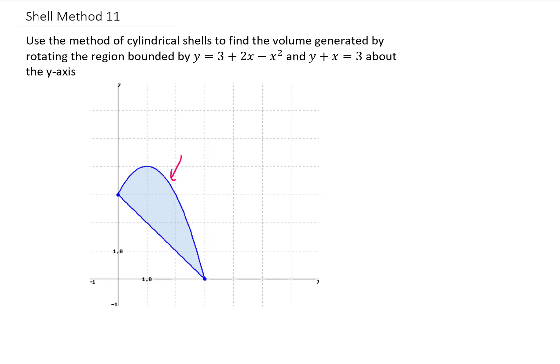The first thing to note is that this top function is the parabola, and this bottom function is the line that's given. Now if we're going to use shells to rotate this region about the y-axis, what we'll do is we'll split this region vertically, rotate each one of those slices about the y-axis, and we'll get a really thin shell each time.